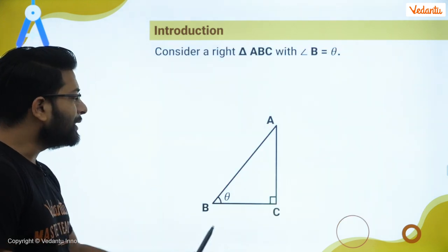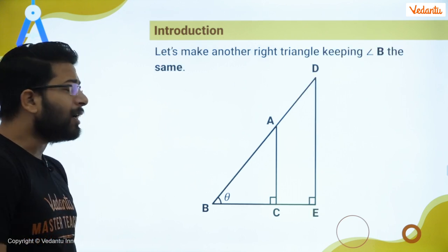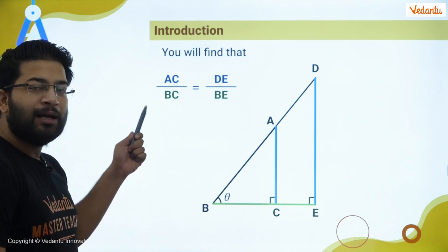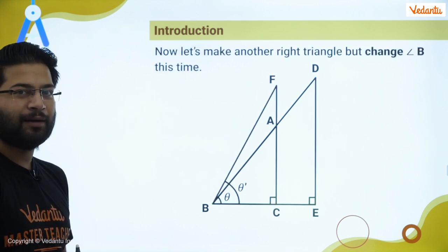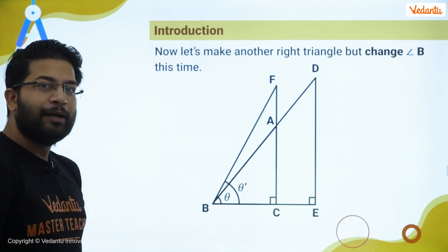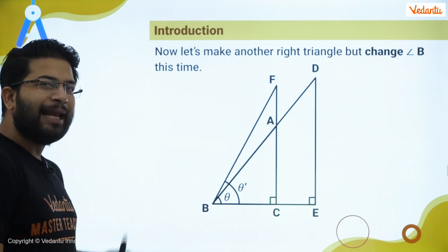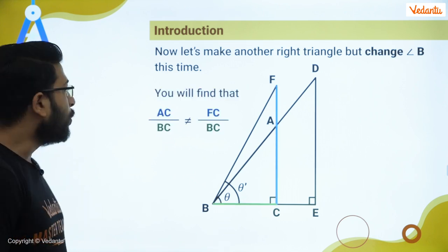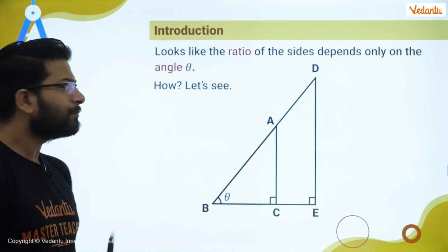Now, consider this right angle triangle where angle B is equal to angle theta. If I take another right angle triangle by keeping the same angle B, I can see that AC upon BC will be equal to DE upon BE — you can verify this with the similarity concept. But if angle B is different, say theta versus theta prime, we will not get the same relation, because if the angles are not equal we cannot prove the triangles similar, and hence the ratios will not be equal to each other.